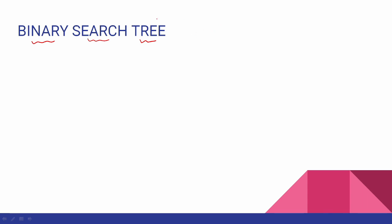So the binary search tree — number three, node one. There are two children in each node: this is the left child and the right child. This is the root. These are not children; this is a leaf node.